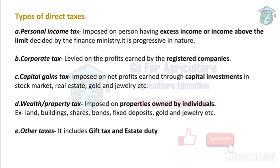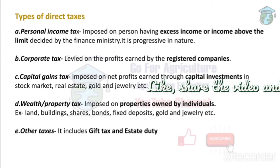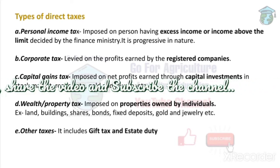Types of direct tax: first is personal income tax, paid by a single individual. Next is corporate tax, which is paid by registered companies. A company must show the government its profit and whether that profit was earned through legal or illegal means — for example, income tax raids on companies.